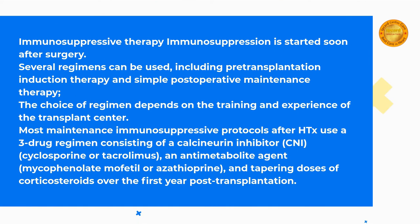Immunosuppressive therapy is started soon after surgery. Several regimens can be used, including pre-transplantation induction therapy and postoperative maintenance therapy. Most maintenance immunosuppressive protocols after heart transplantation use a three-drug regimen consisting of a calcineurin inhibitor (CNI) — cyclosporine or tacrolimus — an antimetabolite agent — mycophenolate mofetil or azathioprine — and tapering doses of corticosteroids over the first year post-transplantation.